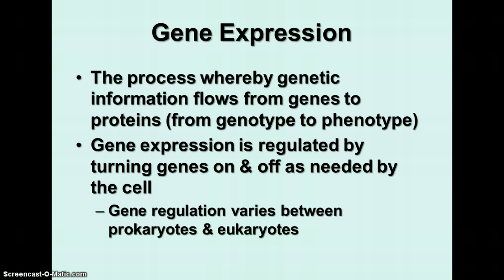Let's think about that for a minute. All of your cells have genes for the same traits and characteristics. Most genes are coding for various kinds of proteins — some may be structural proteins, some may be enzymes that catalyze reactions. For example, all of your cells have the gene to produce insulin, but not all of your cells produce insulin. Insulin is only produced by certain cells in the pancreas gland. In all other cells, that gene is turned off. That's what we mean by gene expression and gene regulation.